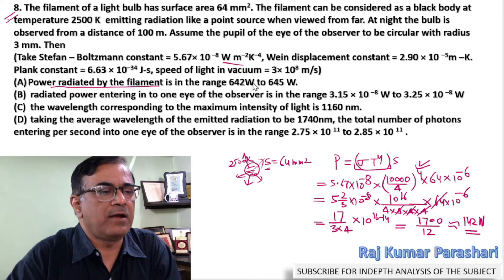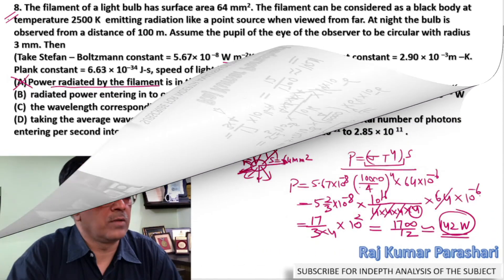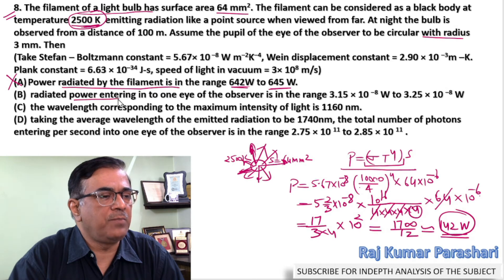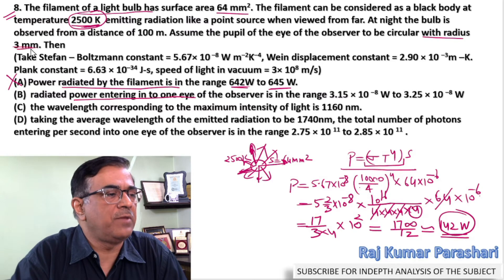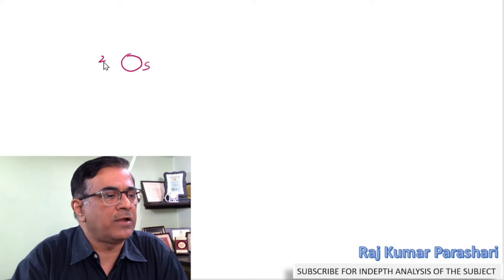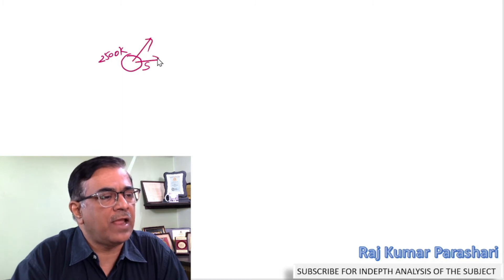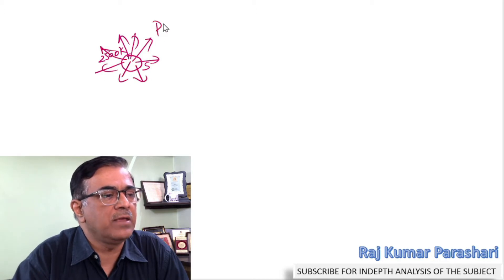This value is quite far away from the expected range, so this option can be rejected straight away. In Part B, I need to find the power entering one eye. The radius of the eye is given to be 3 mm. The filament has surface area S at temperature 2500 K, and the energy emitted per second is capital P, which we calculated to be 142 watts.